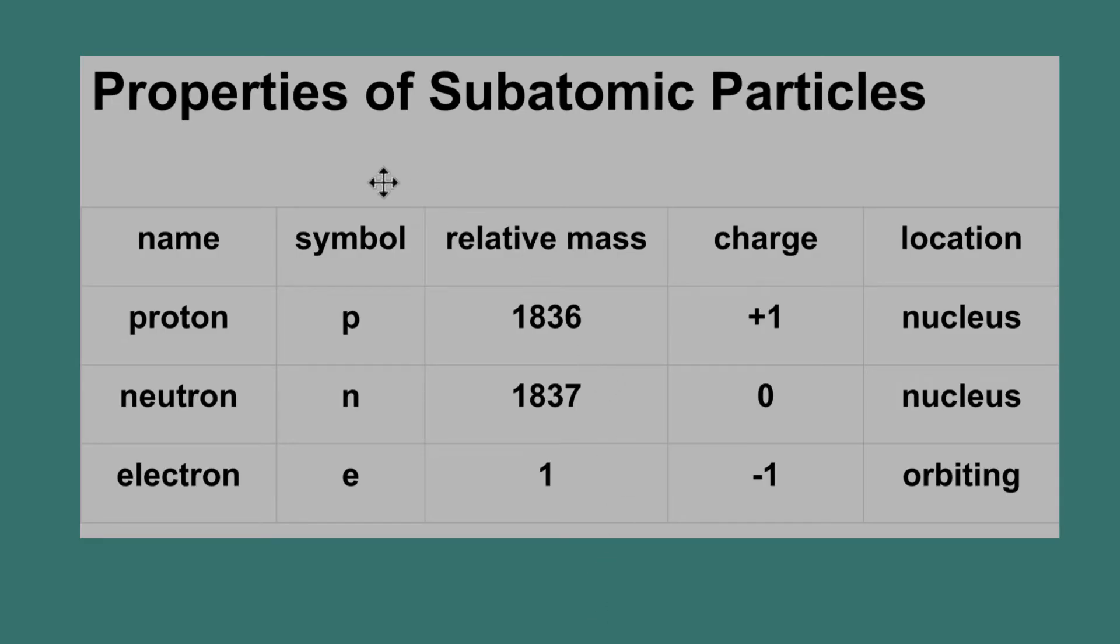So we've seen in textbooks and online resources a comparison chart of the subatomic particles. They will have the name: proton, neutron, electron. They'll have the symbols, so P for proton, N for neutron, E for electron.